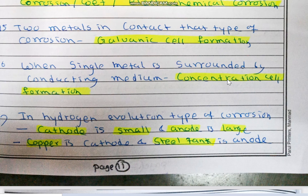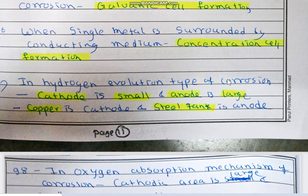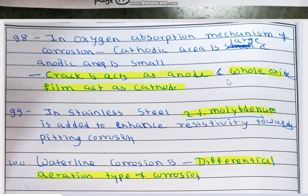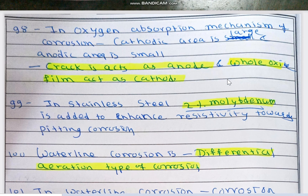In hydrogen evolution type of corrosion, the cathode is small and the anode is large. In this mechanism, copper acts as the cathode (small) while the whole steel tank acts as the anode (large). In the oxygen absorption mechanism, the cathodic area is large and the anode is small. The crack formed on the surface of the oxide film acts as the anode where the metal gets corroded, while the whole oxide film acts as the cathode.